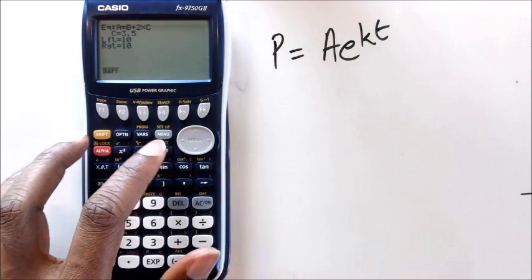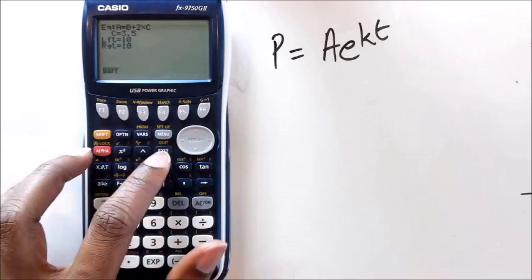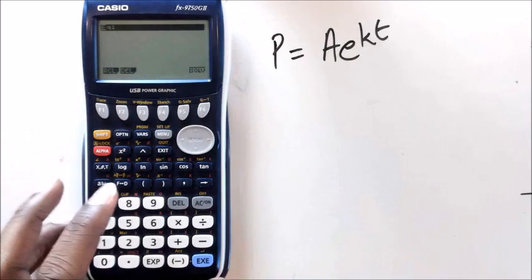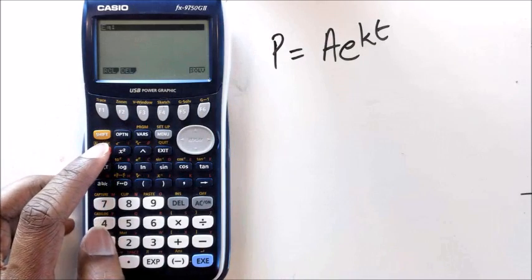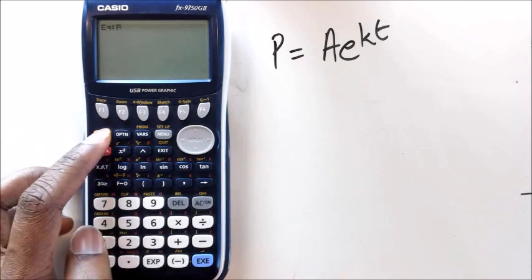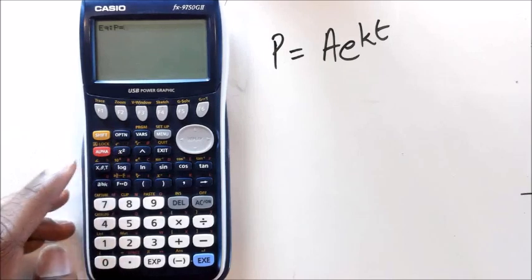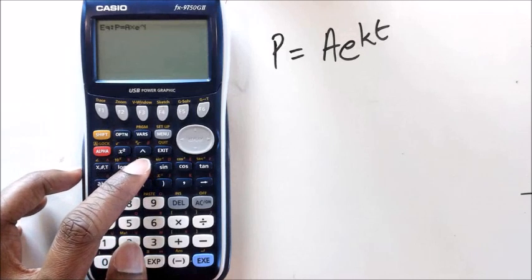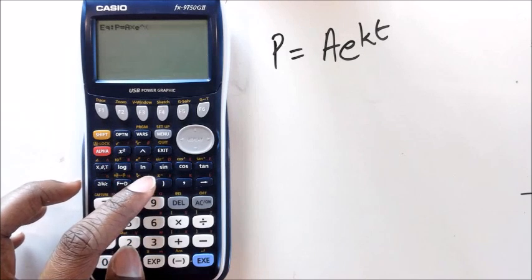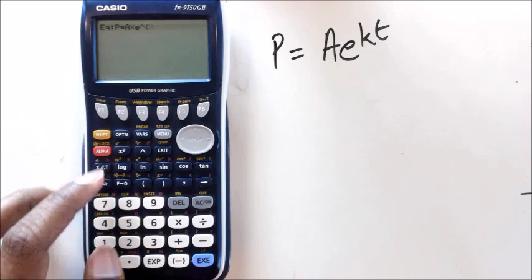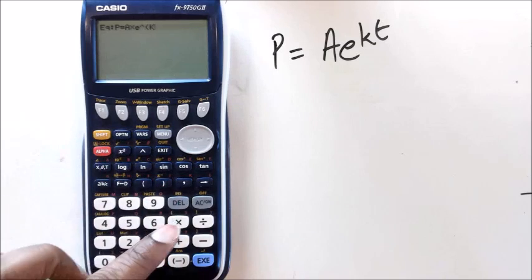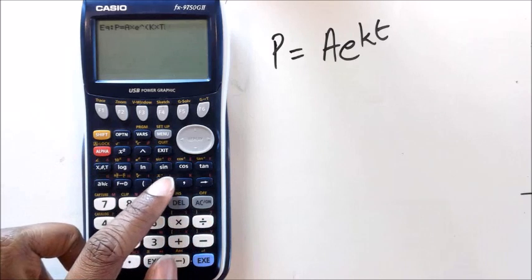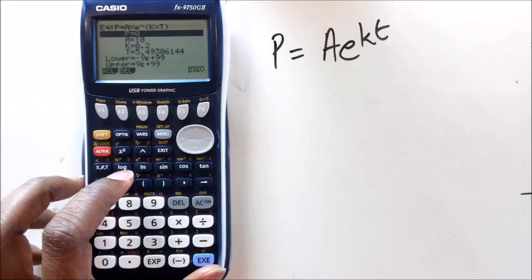Now, what you want to do is, once again, you go into your equation, get rid of that formula, and you type in the formula as it is. So I've got Alpha P equals Alpha A multiplied by E, which happens to be Shift ln. And just make sure you put a bracket around here, and go Alpha K multiplied by Alpha T. Okay, so I've actually set up an equation here.